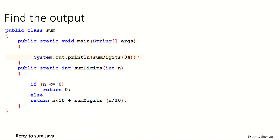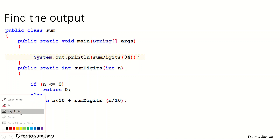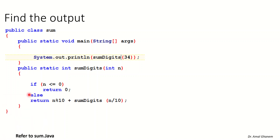We have the second example of a recursive method. In the main method we will have only one statement: a print line of someDigit(34). someDigit is the name of the method. This method will take an integer n and will return an integer. So we expect to take a number and return a number.